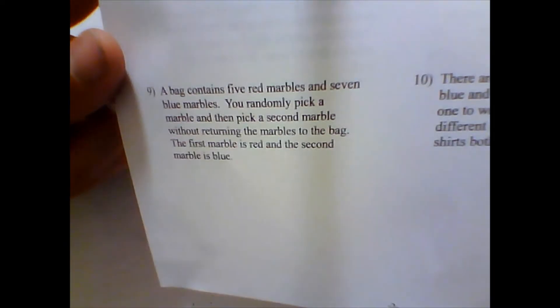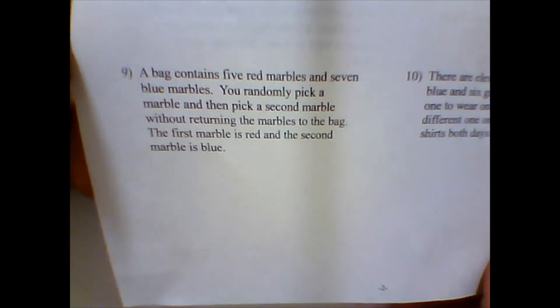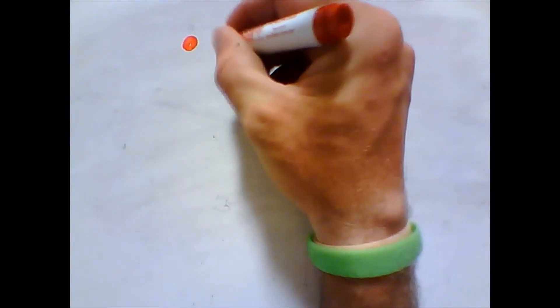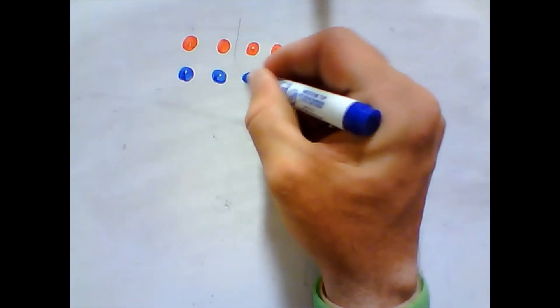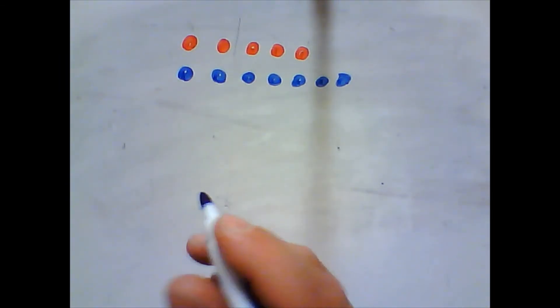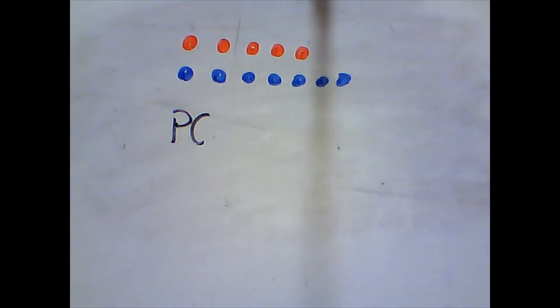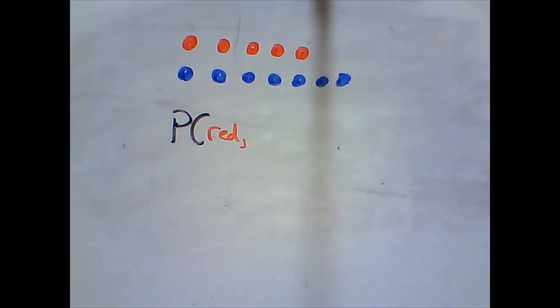We're looking at number nine. A bag contains five red marbles and seven blue marbles. You pick a marble, then pick a second marble without returning the marbles to the bag. The first marble is red and the second marble is blue. So: five red marbles, seven blue marbles. We want the probability that we have a red marble first and then a blue marble.